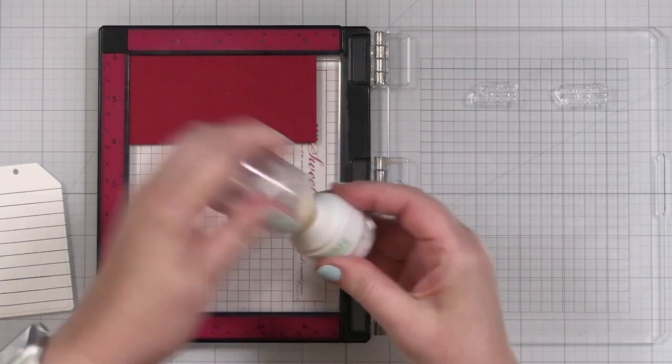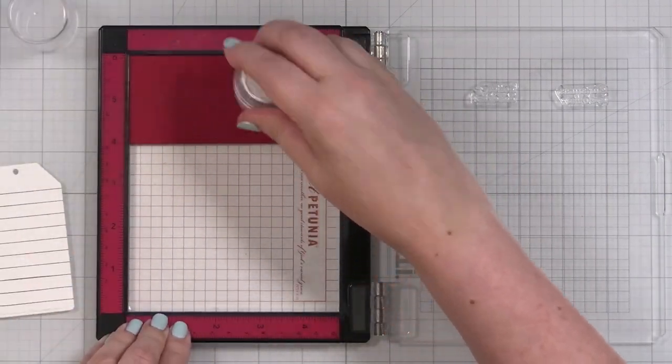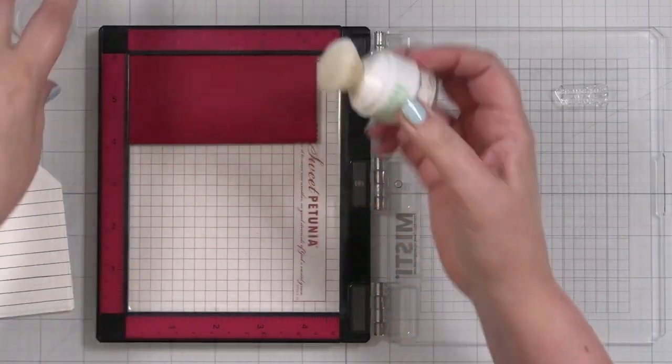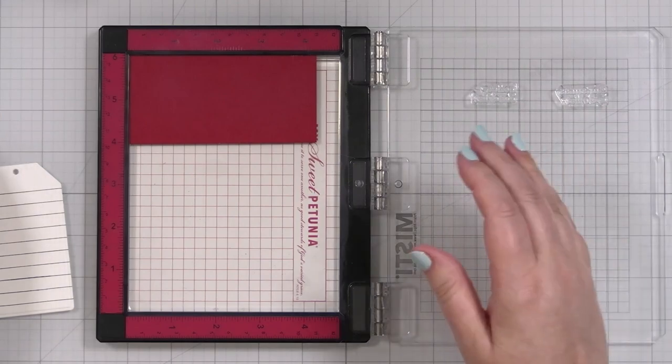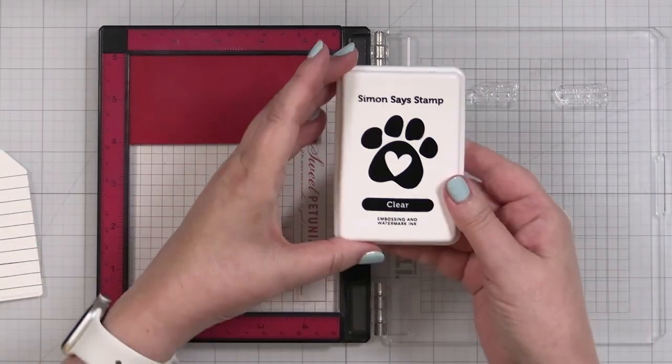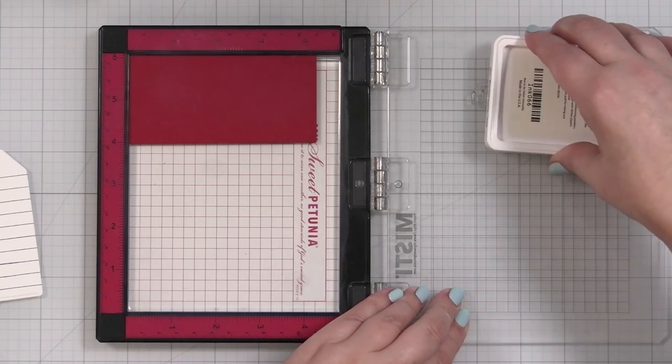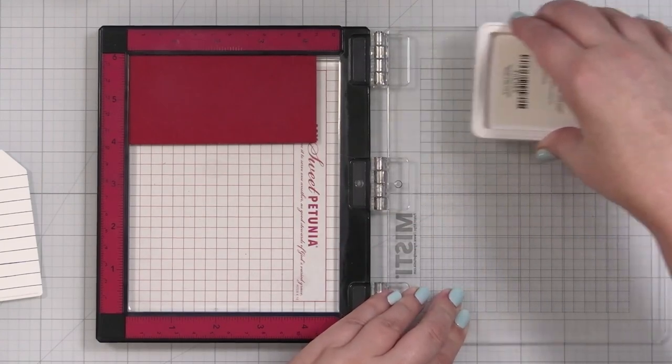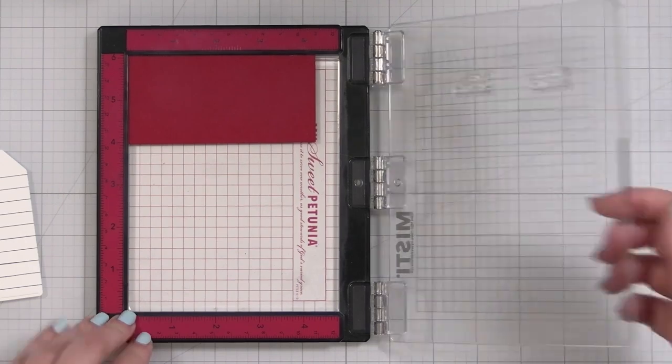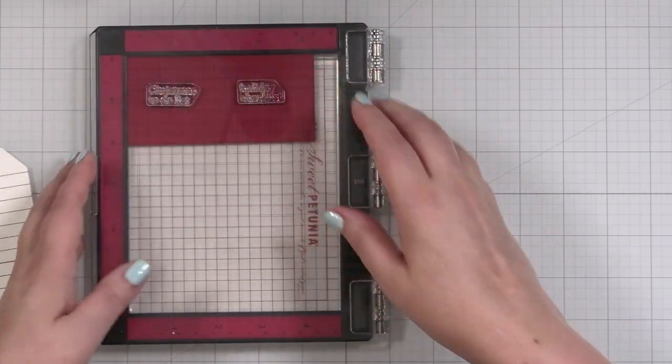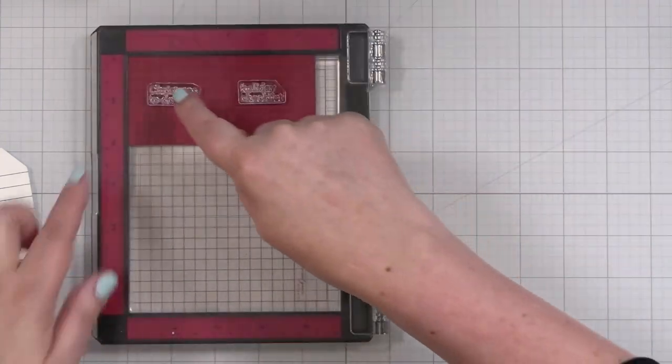I'm going to take my Simon Says Stamp Antistatic Powder Tool just to powder up the cardstock so that when I stamp with my clear embossing ink, my embossing powder only sticks to where this is. This is the clear embossing ink from Simon Says Stamp. Ink that up, bring it down and press to transfer. Oh, yep, that looks great.